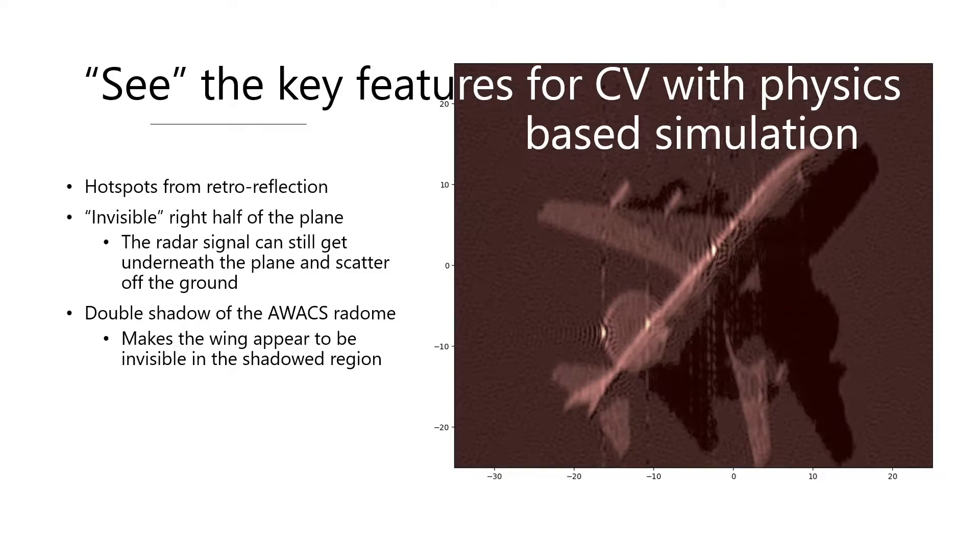I'd just like to give one example of that. This is an example of a simulated radar image. And in these images, we actually see some of the aspects that are important for the radar sensor. You see hot spots from the reflections on points of the plane. We can see that actually half the plane seems to be invisible.